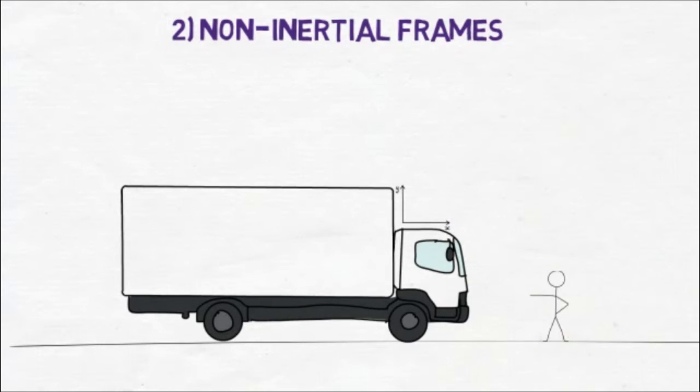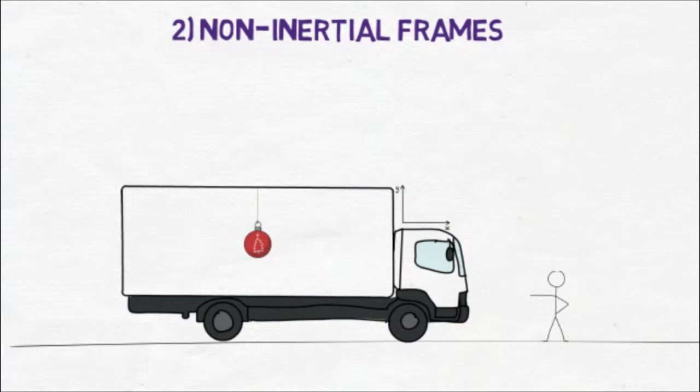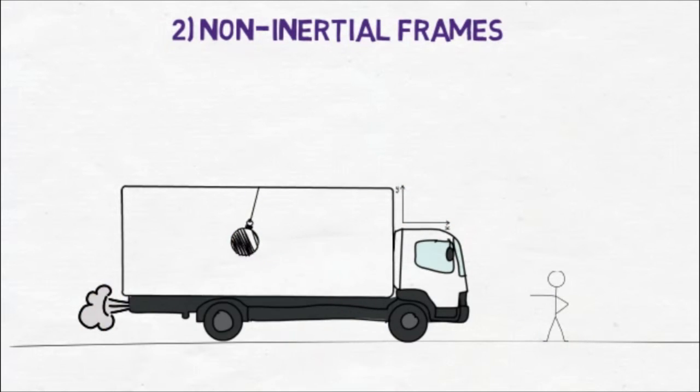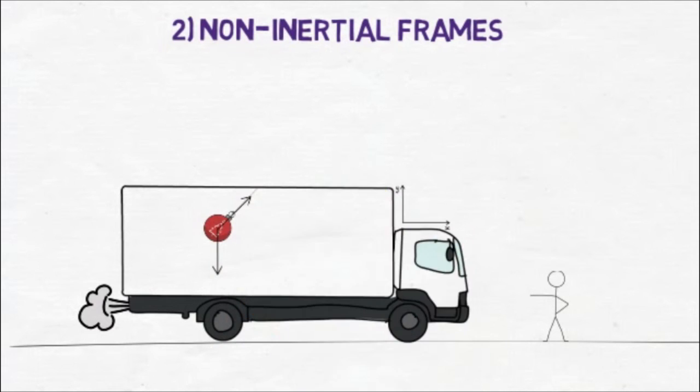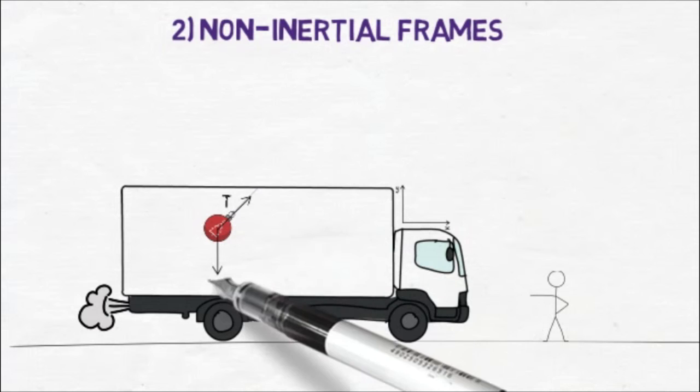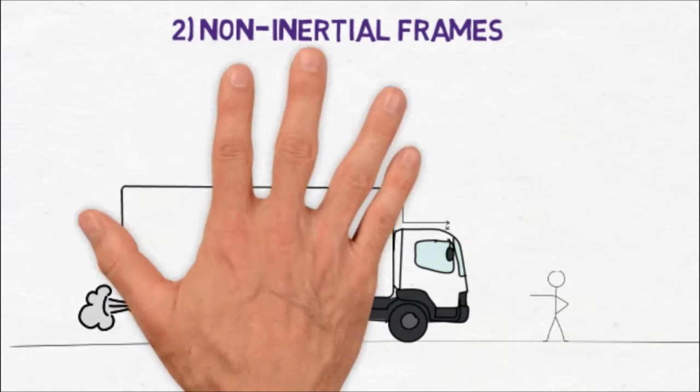Imagine you're in front of a truck with a pendulum stuck to its ceiling. You're on an inertial frame of reference as the floor is stationary. As the truck begins to accelerate to the right, you understand that the pendulum will swing left, because according to the law of inertia, the pendulum will try to maintain its zero velocity since no real net force is acting on it.